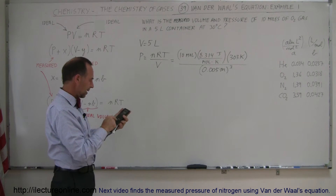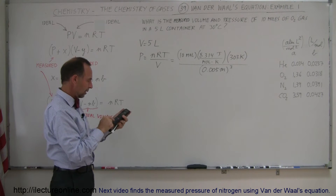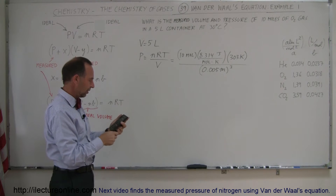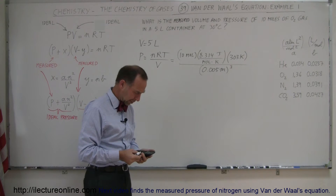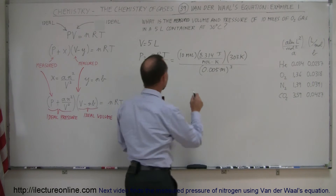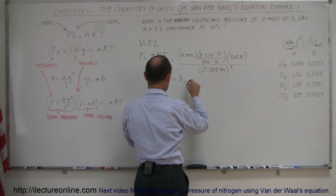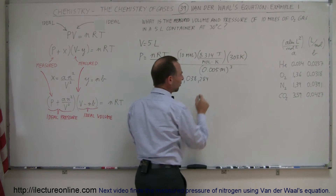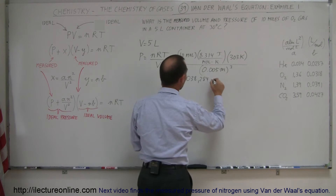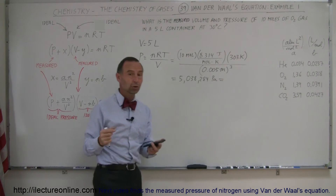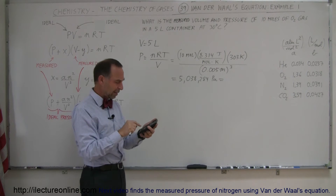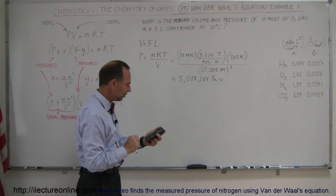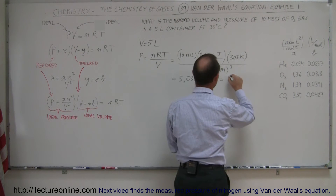So we calculate: 10 × 8.314 × 303 ÷ 0.005, which gives us 5,038,284 Pascals. Converting to atmospheres by dividing by 101,325 Pascals per atmosphere, we end up with 49.7 atmospheres.